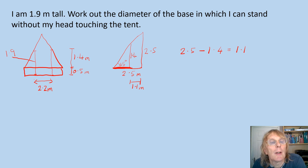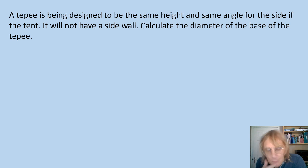So let's have a look at another one. I was looking at this idea - you could have a teepee. Now a teepee is going to go straight to the grass. It looks a little bit like a bell tent, but it'll go straight to the ground. It's not going to have that side wall. So it's the same height and same angle for the side. It will not have a side wall. Calculate the diameter of the base of the teepee.